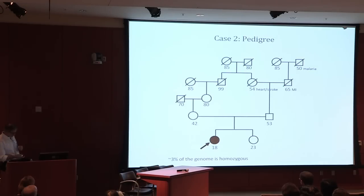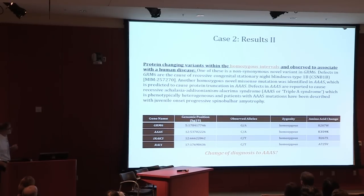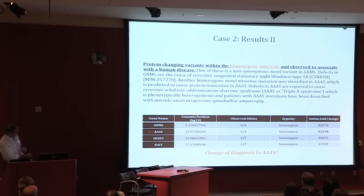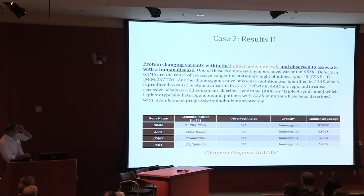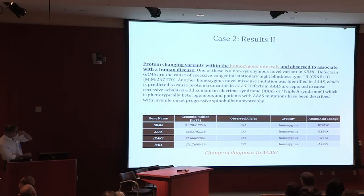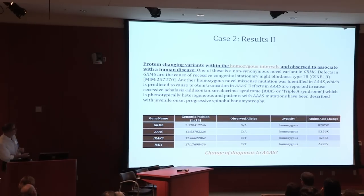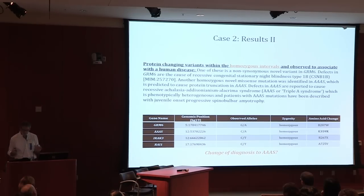In the process of the genomic data board, looking at the regions of the genome that are homozygous in this individual — large homozygous stretches representing regions of identity by descent — led our discussion to a gene actually outside of our primary gene list. The gene AAAS had a homozygous nonsense mutation within a large homozygous interval manifested by the consanguinity. Defects in AAAS are reported to cause recessive achalasia-alacrima-adrenal insufficiency syndrome, or AAA syndrome, which is phenotypically heterogeneous — and a substantial component of those individuals actually have juvenile onset progressive spinobulbar amyotrophy and neuropathies, which fits this child's condition very well.